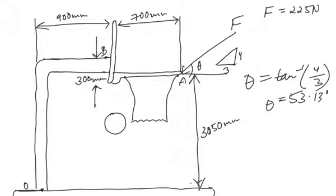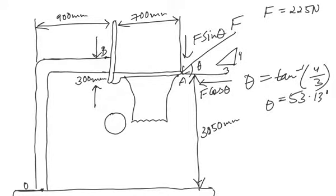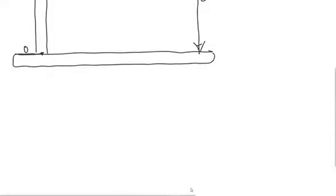The component of force F in one direction will be Fcosθ and the other component will be Fsinθ. We have to find the moment about point O and point B, and in both cases the moments will be due to Fcosθ and Fsinθ.